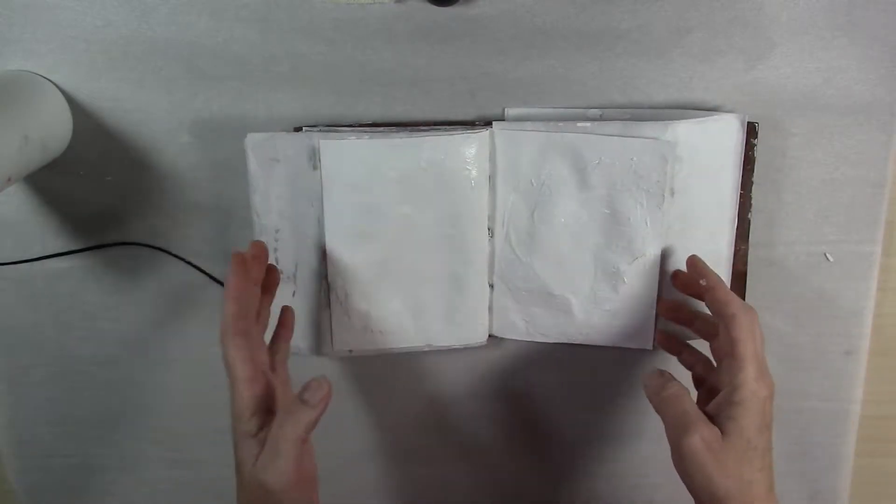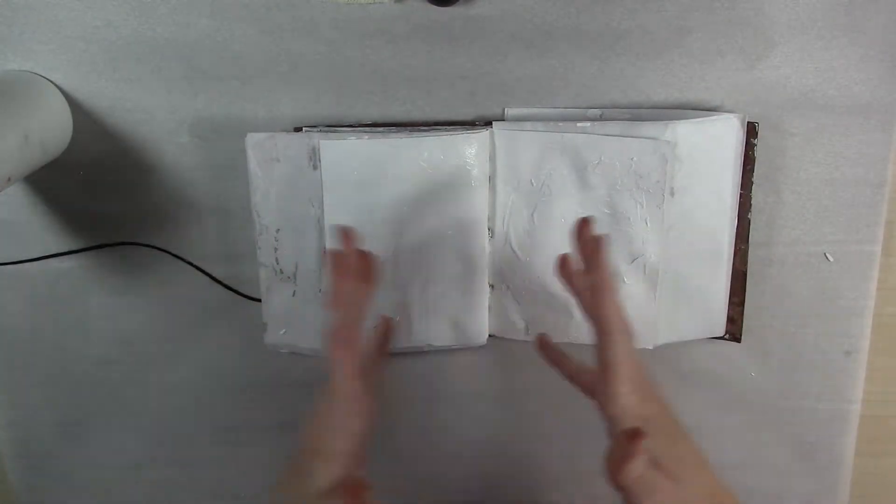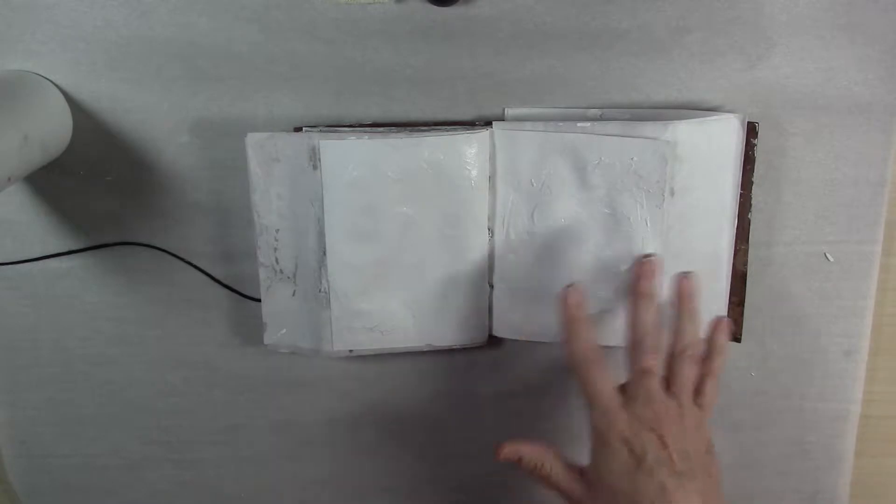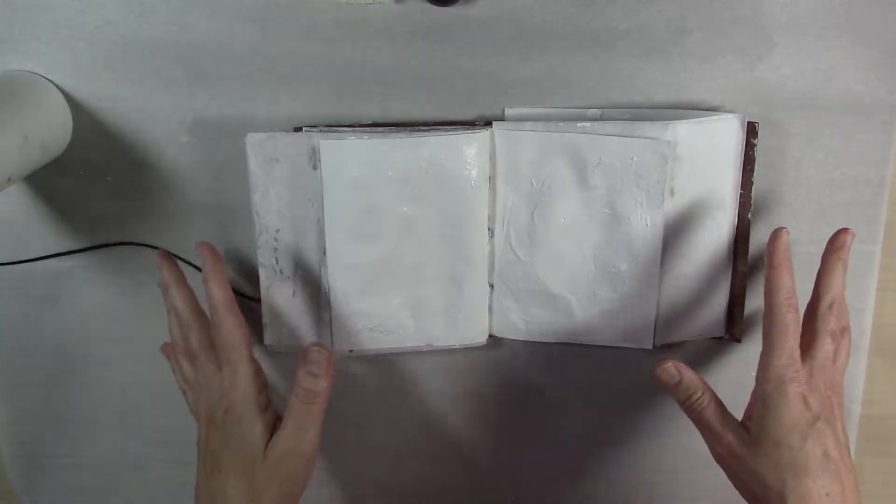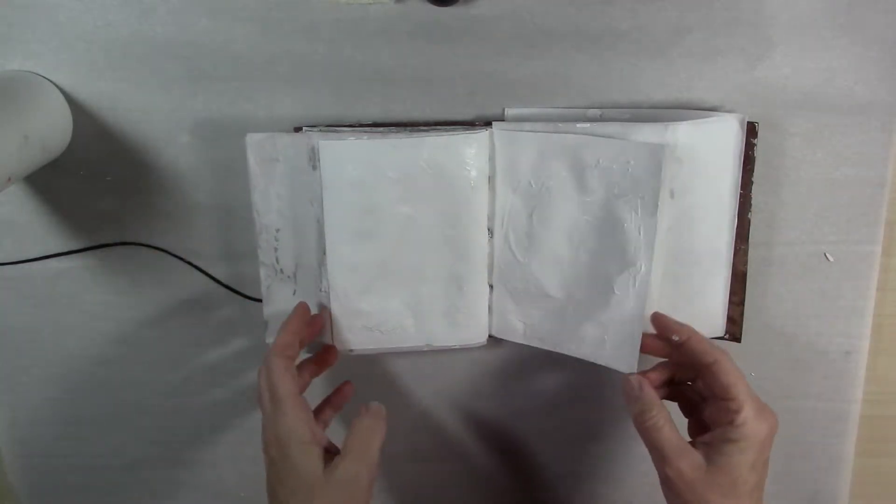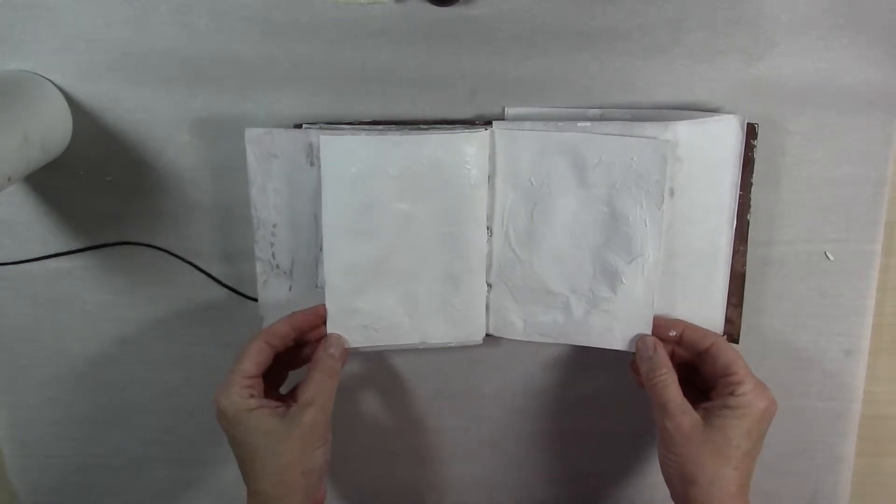Again, let that dry. You can dry it with the heat gun or you can just set it aside. When I did this book, I actually did the joint compound on all the pages and the gesso on all the pages just to have them all prepped and ready to go. So I'll be back in a few minutes.